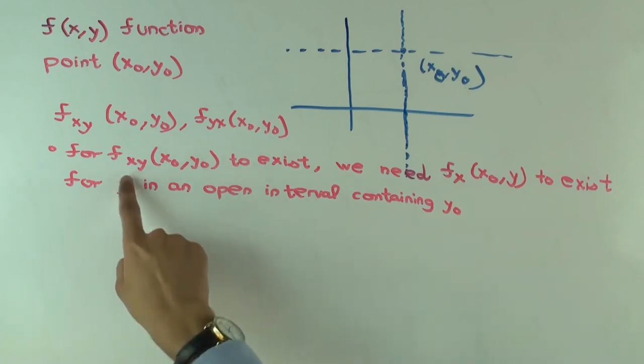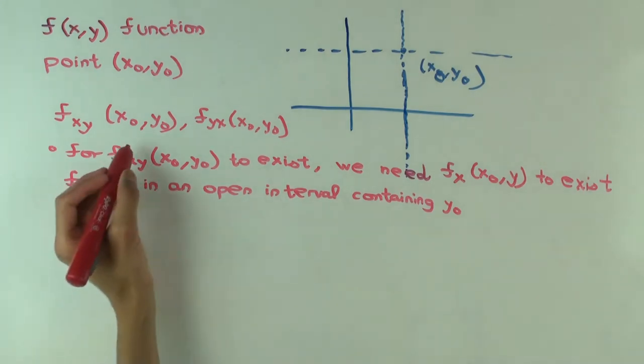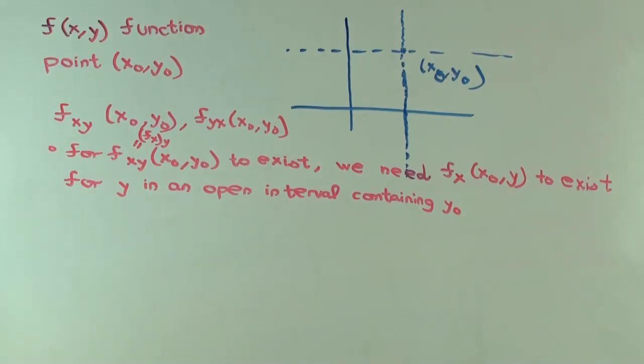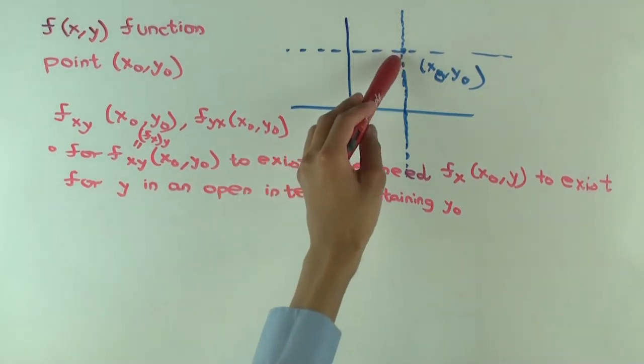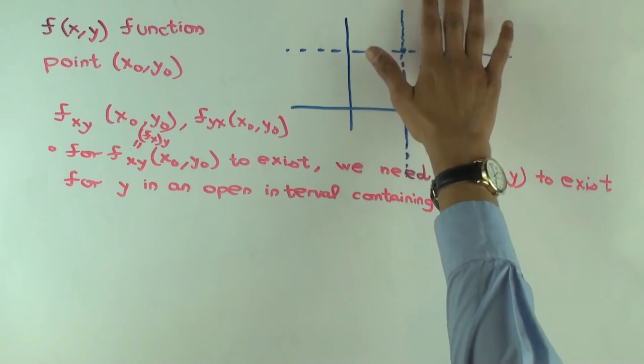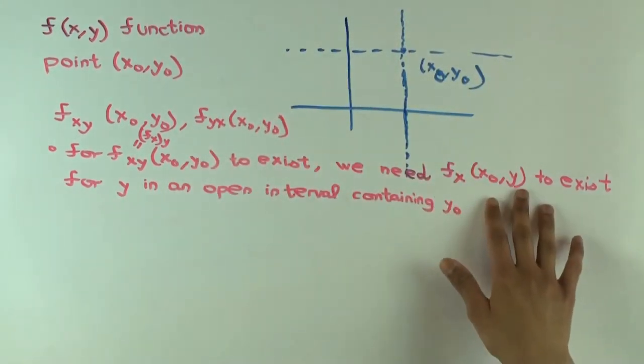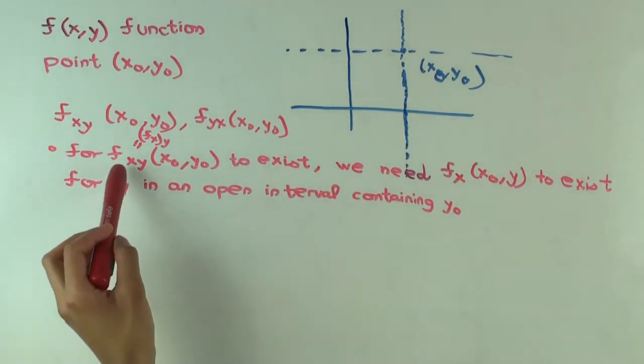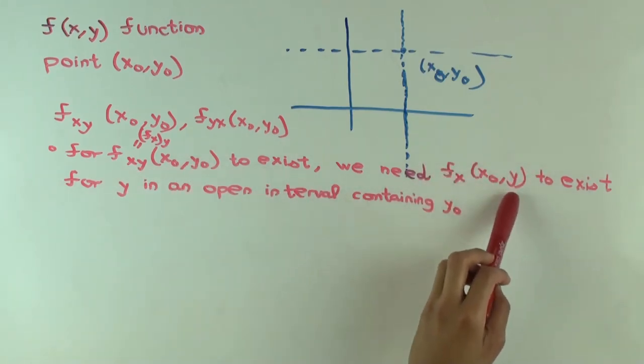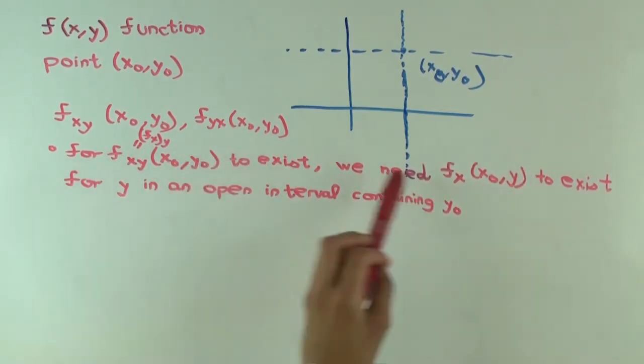So we are doing f sub xy. What is f sub xy? That's just f sub x sub y, right? So it's the y partial of f sub x. So for the y partial of f sub x to exist at a point, what you need is you need f sub x to exist for y close to the point. Why is that? Because the definition is a difference quotient.